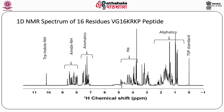The 1D NMR spectrum of our reference peptide VG16KRKP, which has 16 residues overall, is shown. In this spectrum, around 10 ppm you see the peak from the side chain of tryptophan, which is an indole — the indole NH. Then between 8 and 9 ppm you see the various amide NH. Around 3.5 to 5 ppm you get signals from H alphas connected to C alphas, and between 0.5 to 2.5 ppm you see peaks from various aliphatic protons. The standard used for aqueous sample is TSP, and you see the peak of TSP at 0 ppm.